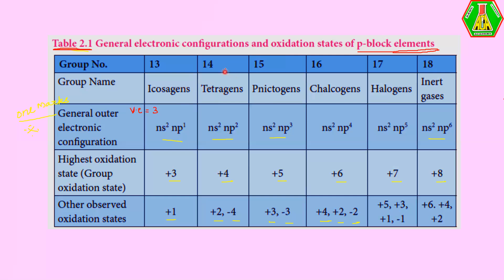The second P-block group is group 14, the tetragens. The outermost electronic configuration is ns²np² because the valence electron count is 4. The group oxidation state of a 14th group element is +4, and other observed oxidation states are +2 and −4 also.